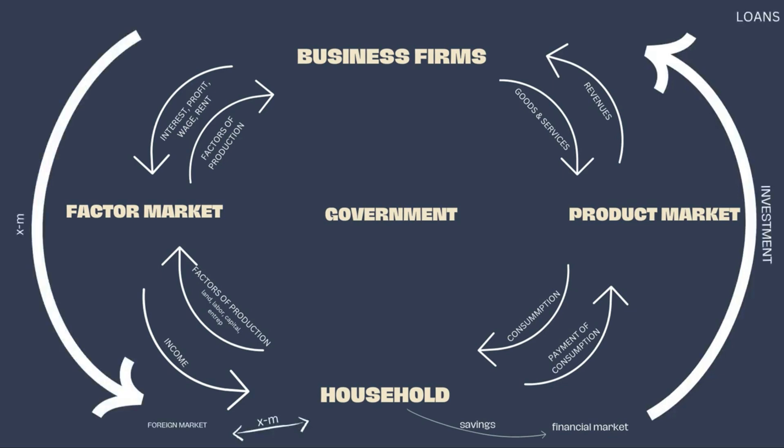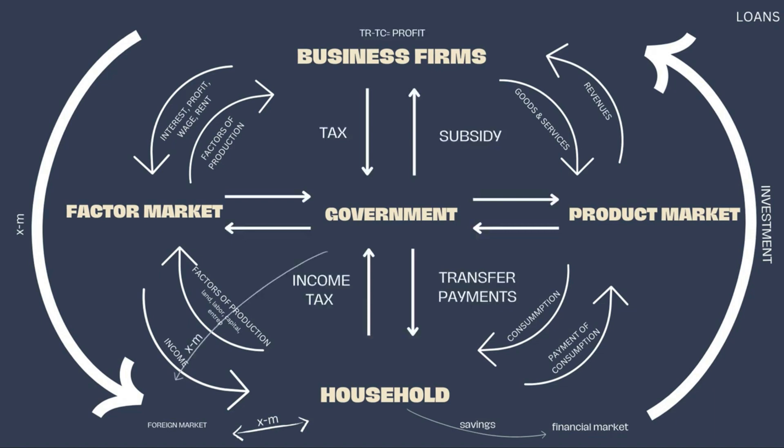Now what is the role of the government? The government is the one that collects all taxes from the two sectors, such as income tax, business tax, real property tax, capital gains tax, etc. And in return, the government provides subsidies to businesses and transfer payments to the household in the form of pensions, scholarships, etc. The government is also responsible for expanding trading activities with other markets, or the foreign market, and business firms also transact with foreign businesses.